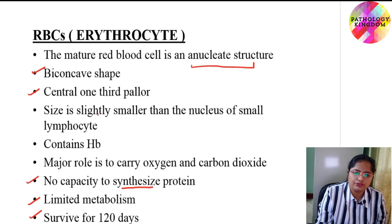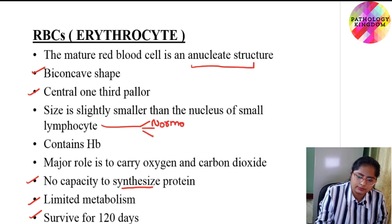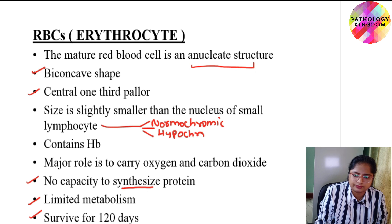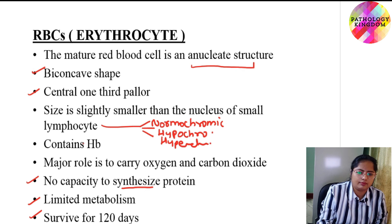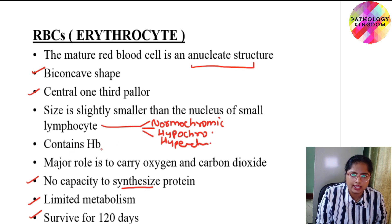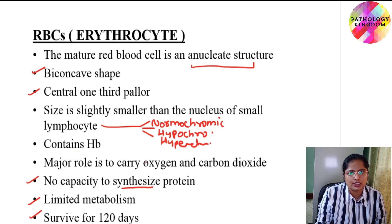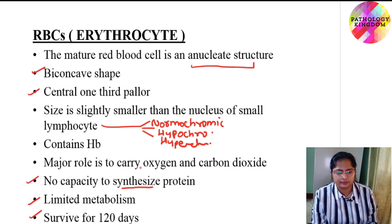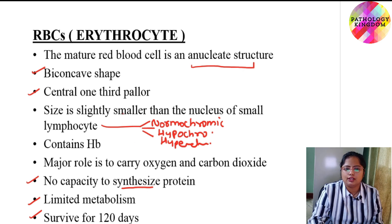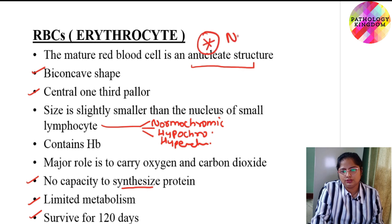On the basis of this property, it is divided into normochromic, hypochromic, and hyperchromic. Always remember, the mature red blood cell is anucleate — it has no nucleus.